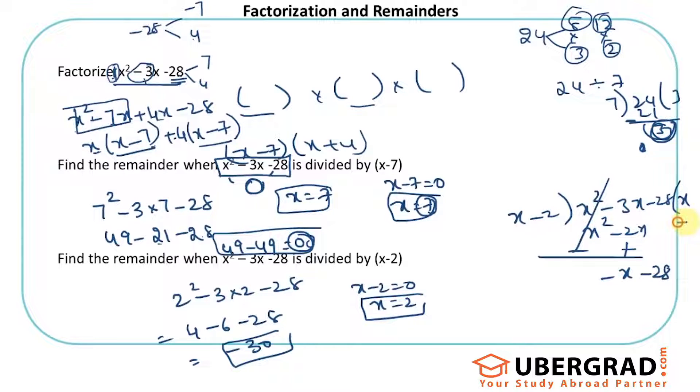I'll do -1. x × (-1) = -x, -1 × (-2) = +2. They get cancelled out. -28 - 2 = -30, that's the remainder. You can simply calculate by substituting rather than doing this method. It's easier and faster. This might take more time and might be difficult.